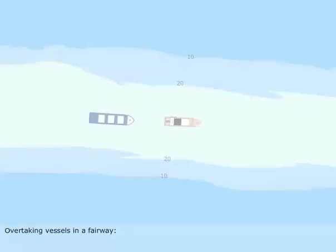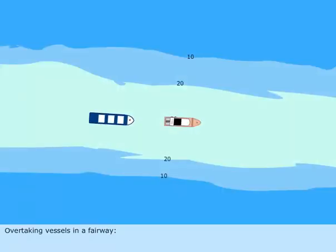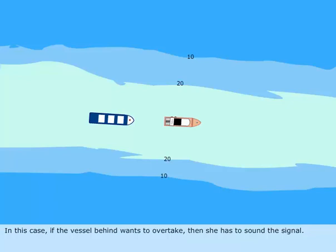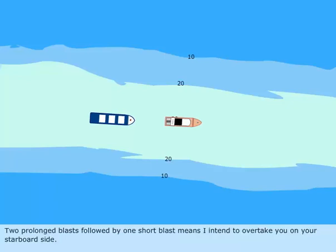Overtaking vessels in a fairway. In this case, if the vessel behind wants to overtake, then she has to sound the signal. Two prolonged blasts followed by one short blast means I intend to overtake you on your starboard side.